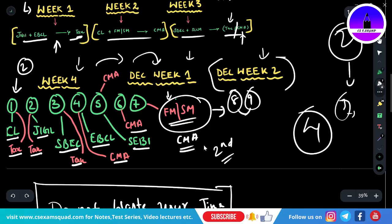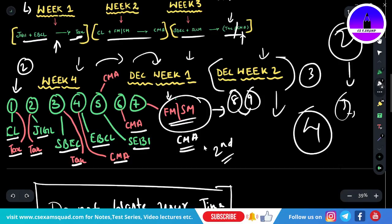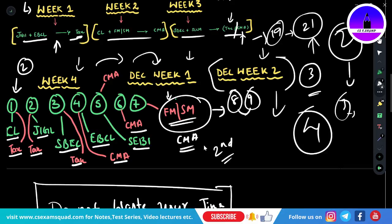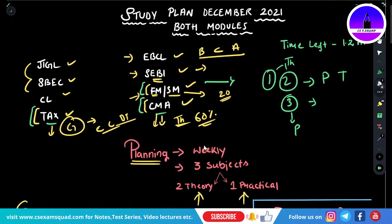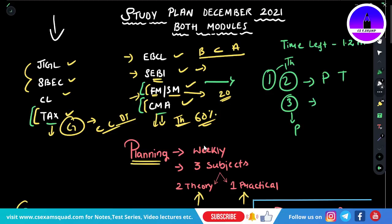After December week two, you can start your third revision. For example, if your examination is on December 21st, by December 19th you should start revising that particular subject. At that moment everyone will have their own plans - this study plan is a structure, a foundation. Students who have no plans should follow this strictly. That is how you plan for both the modules.